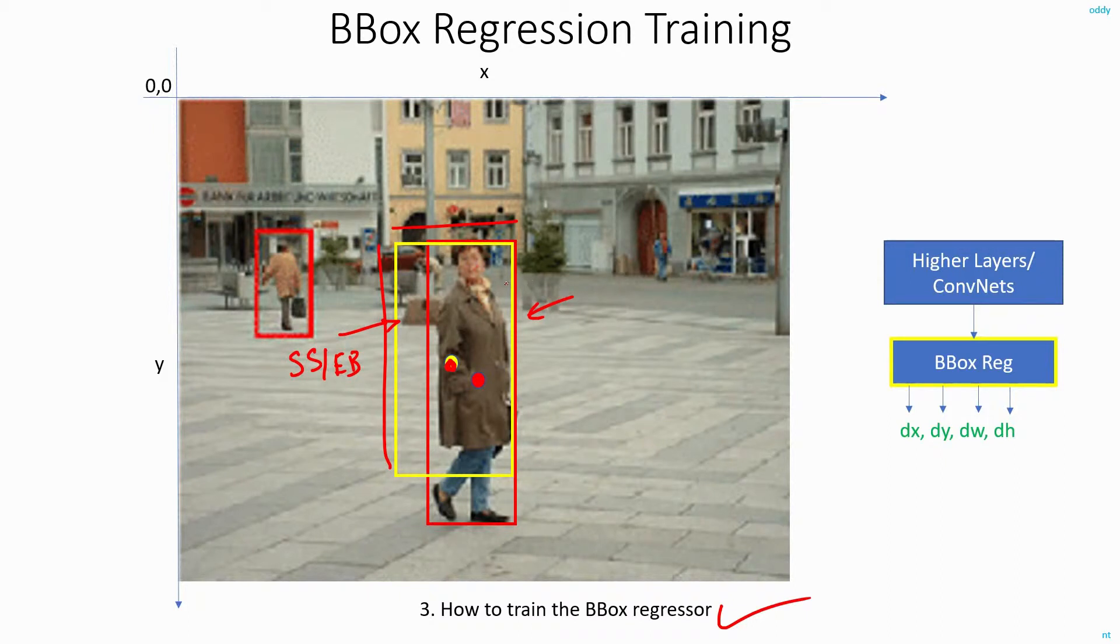It is the duty or job of the bounding box regressor to refine the yellow box here and to modify the dimensions so that you get the red box. And not only the dimension, not only the height and width, it also needs to tell you what is the correct location of this box. That is, it has to give the correct midpoint of the red box.